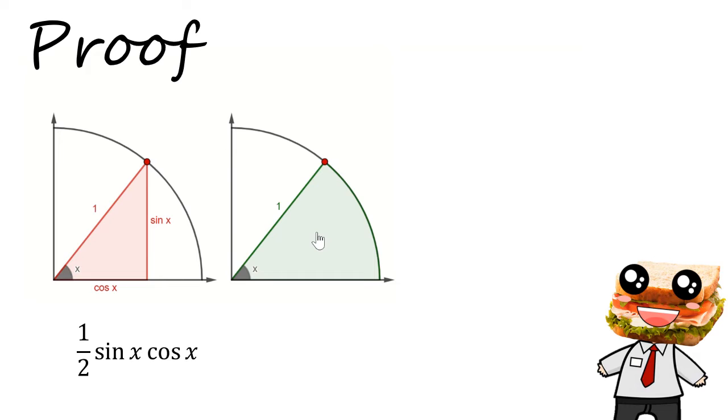And this circular sector has an area of half r squared theta. And this formula only works if theta is measured in radians. That's why it is very important in calculus that everything is done in radians measure. So this green circular sector is going to have a formula of half times x.